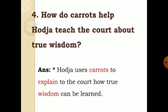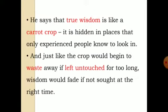Fourth question: How do carrots help Hoja teach the court about true wisdom? Hoja uses carrots to explain to the court how true wisdom can be learned. He says that true wisdom is like a carrot crop — it is hidden in places that only experienced people know to look in. And just like the crop would begin to waste away if left untouched for too long, wisdom would fade if not sought at the right time.